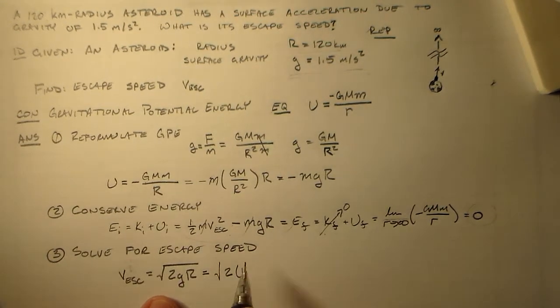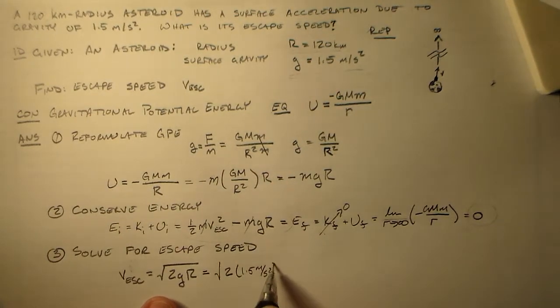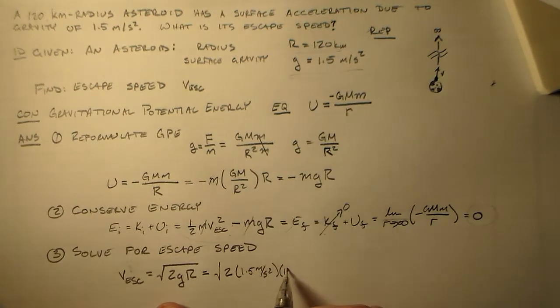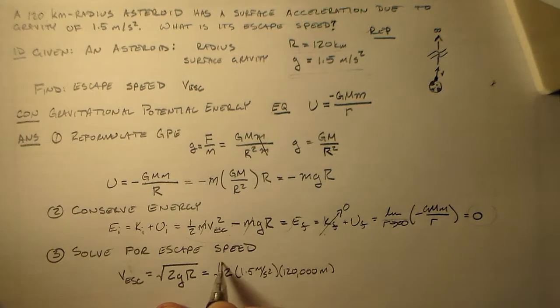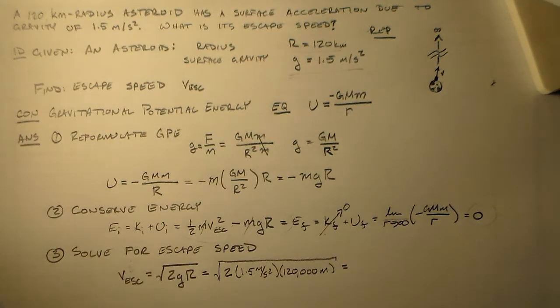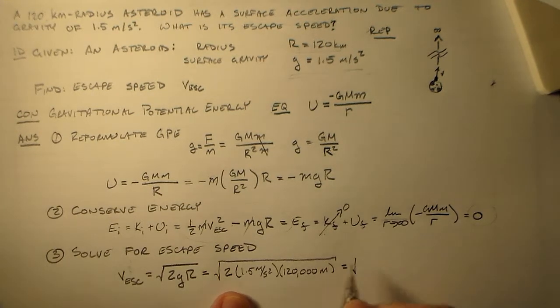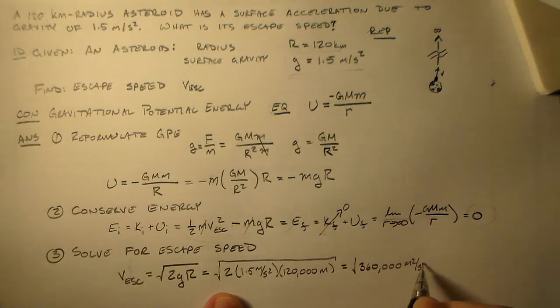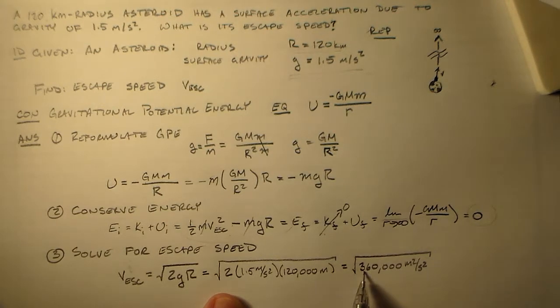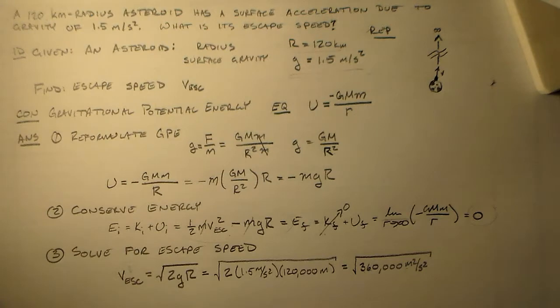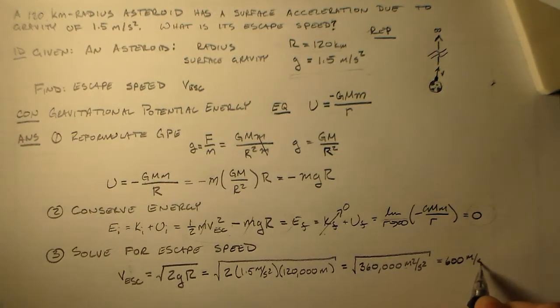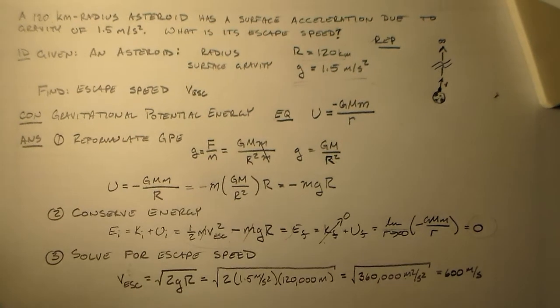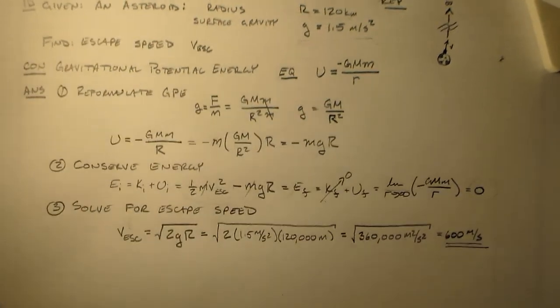So, then we have my square root of 2. I have 1.5, right? Meters per second squared here. And I have my 120 kilometers. That's 120 kilometers. So, we've got the square root of 2 times 1.5 is 3. 3 times that is 360,000 meters squared per second squared. Okay. So, this is like 36 times 10,000. And that's like saying 6 squared times 100 squared. So, I'm going to say that that means I have 600 meters per second. That's all you need. Right? That's the speed.